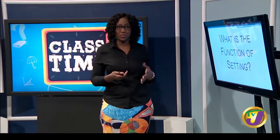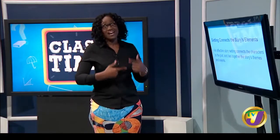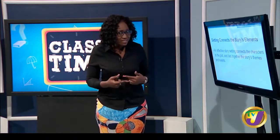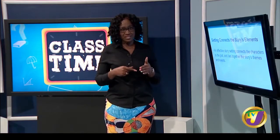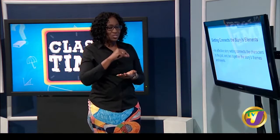So the function now: setting connects the story's elements. What are the elements of a story? You have character, plot, theme, and of course setting. Setting is like the linchpin — it holds all these together. It is the one element that all the other elements have to interact with. Your characters have to interact with the setting. Your plot has to take place somewhere. Your themes will interact with the setting as well, because your setting can also be the reason a certain theme is coming out. Your setting needs to connect all these elements together.